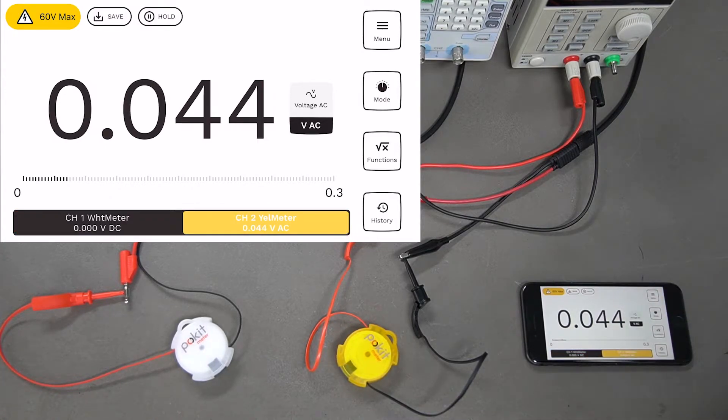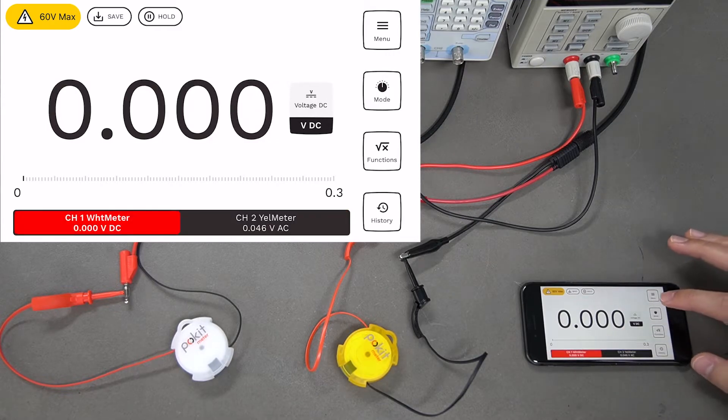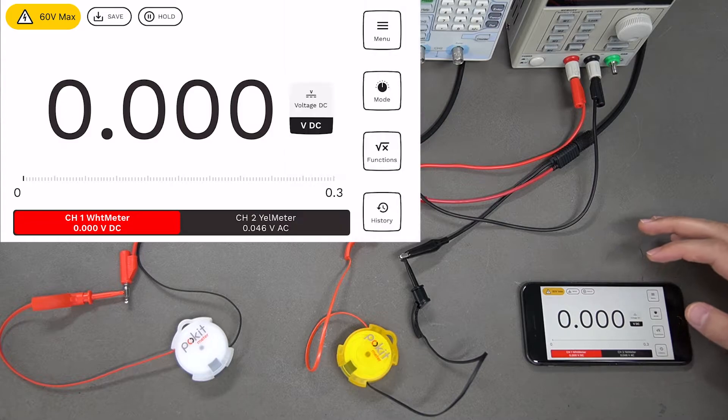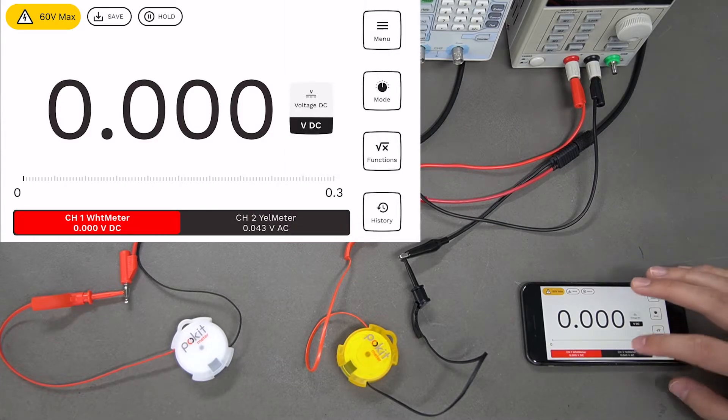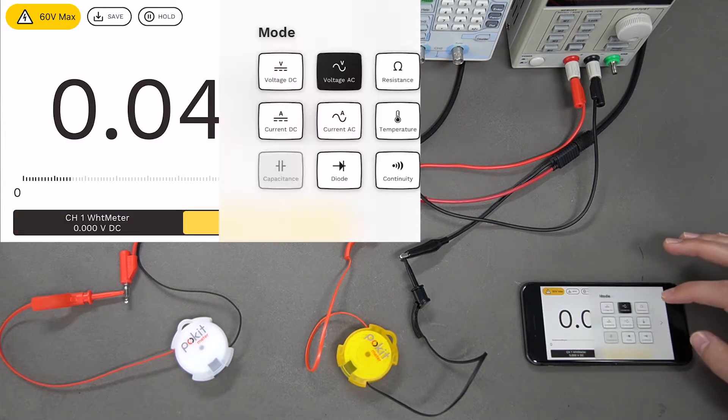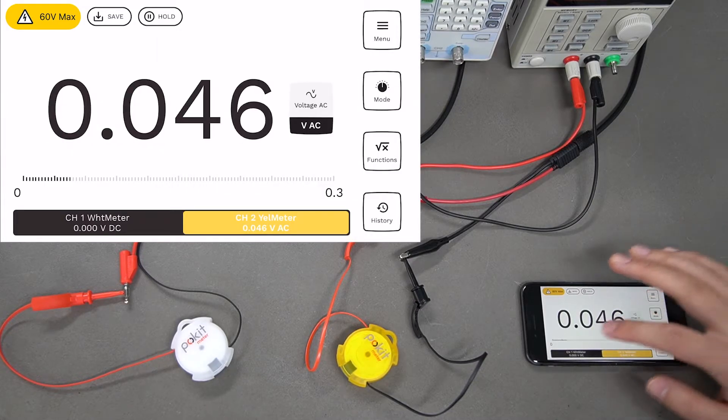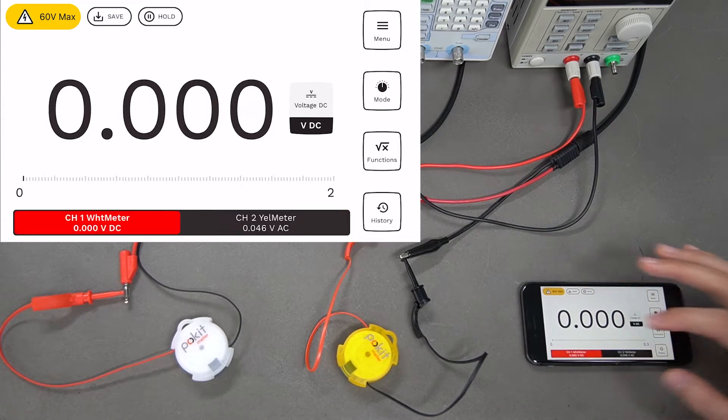This white one will be measuring voltage DC, which I've got hooked up to a power supply here, and the yellow one will be measuring voltage AC. You can switch the modes over here on the side by pressing the mode button. We'll go back to our first one.